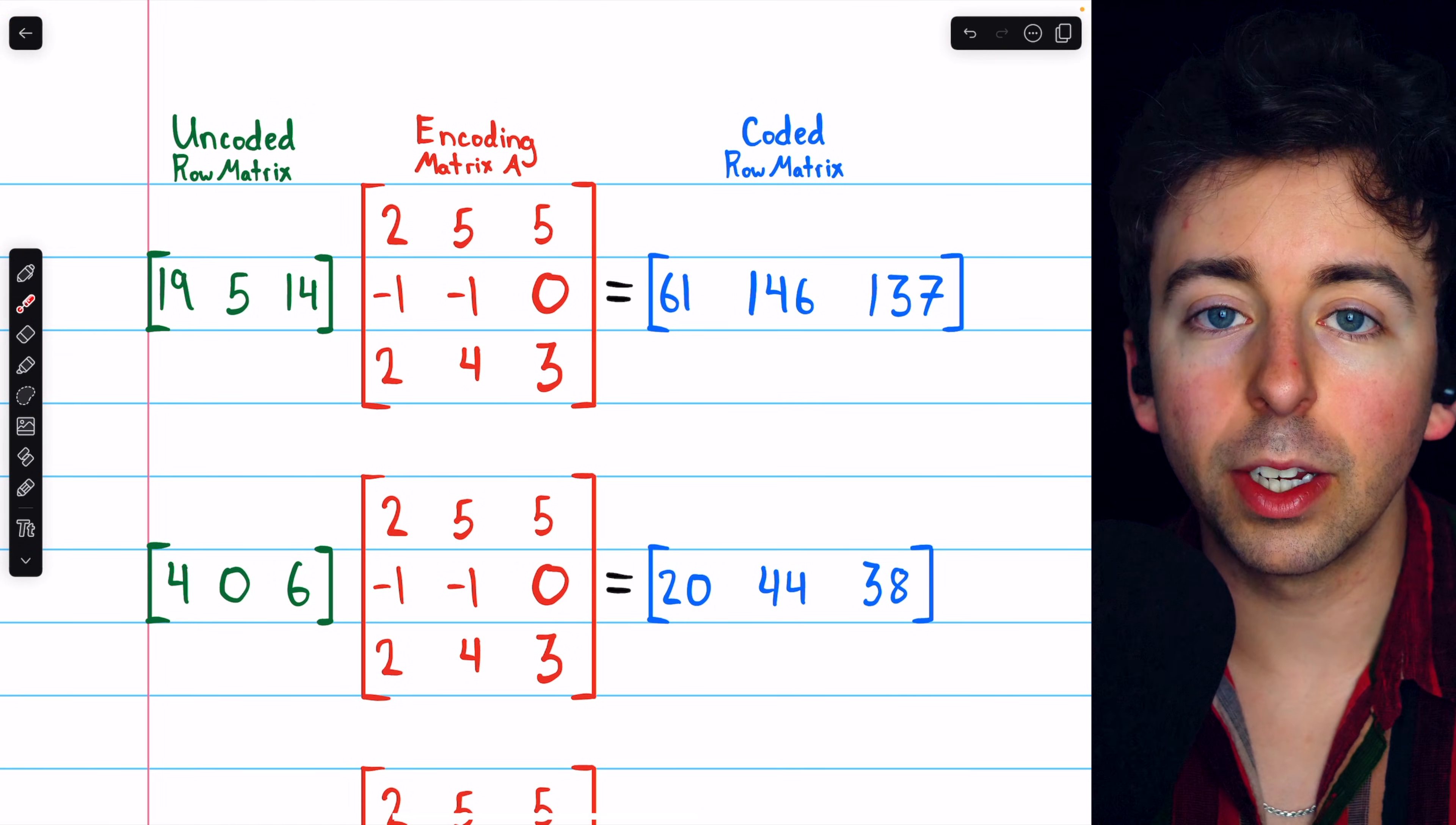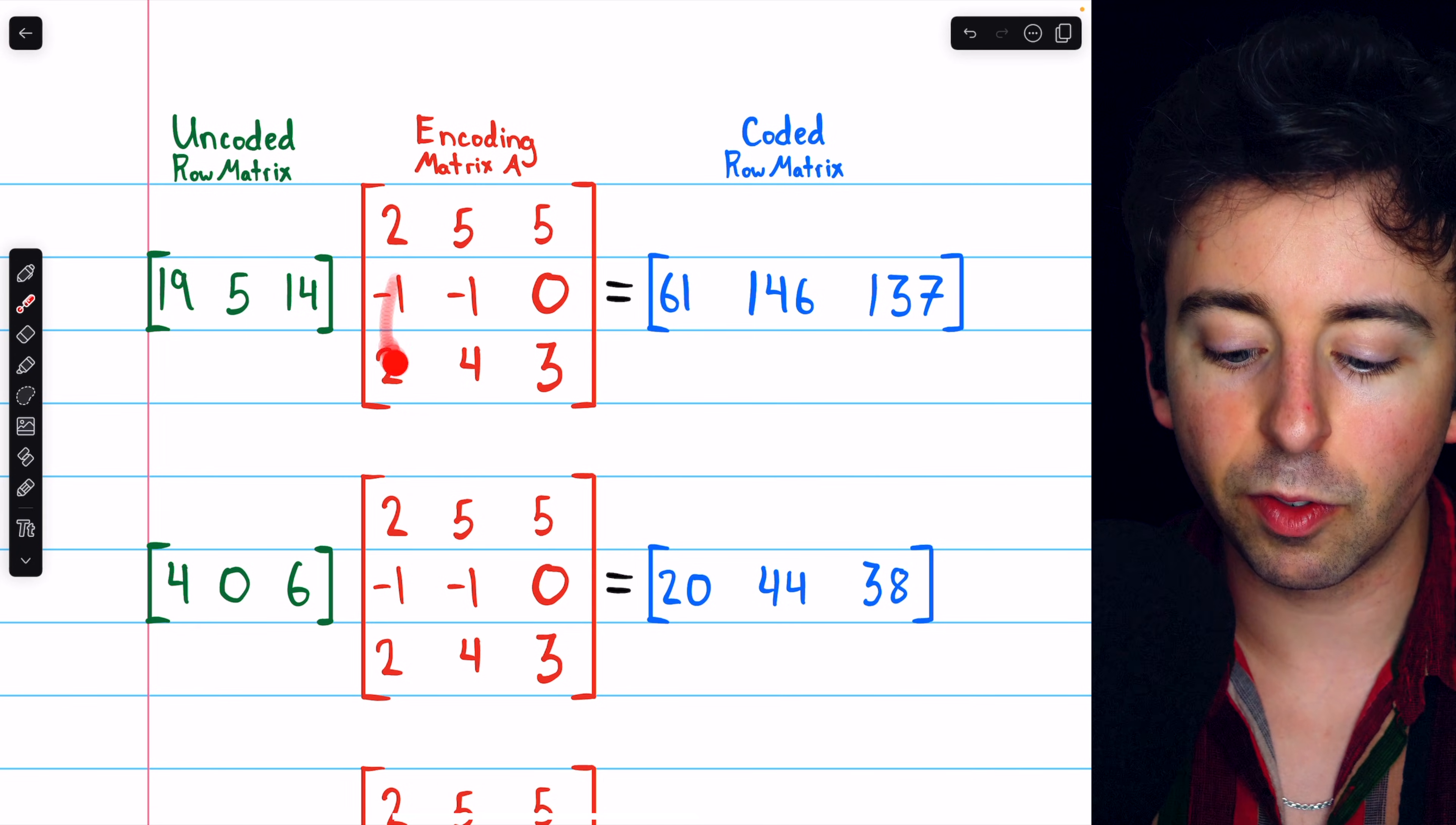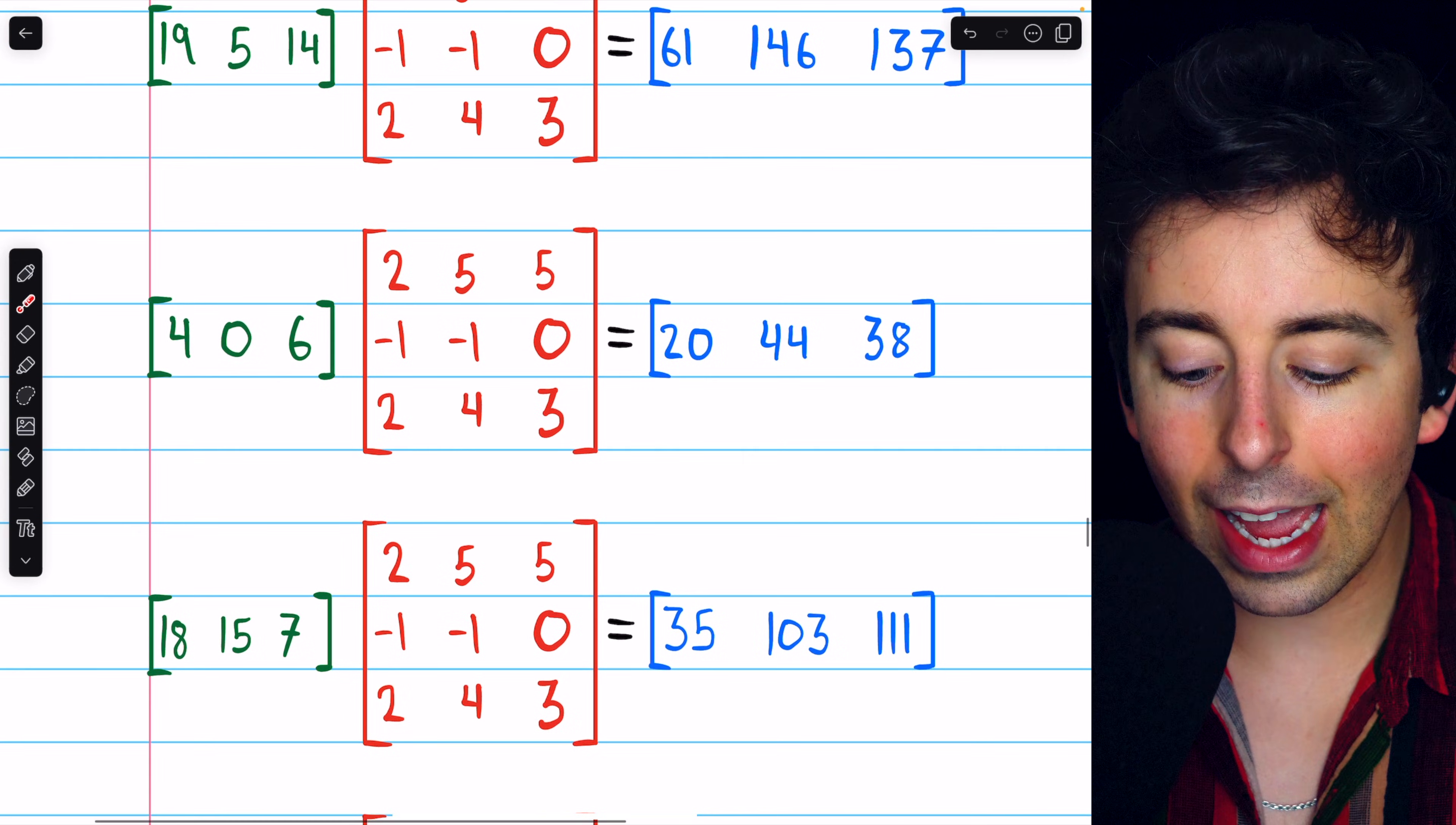Doing this, we will get a coded row matrix corresponding to each of the uncoded row matrices. So we take each uncoded row matrix, multiply it by the encoding matrix A that we've chosen, and we get this coded row matrix. Here's the second uncoded row, multiply by the encoding matrix, and we get this coded row. And so on.